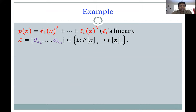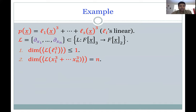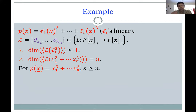Let's look at an example: sums of cubes of linear forms. The linear maps L are partial derivatives with respect to variables x1 to xn, mapping degree-3 polynomials to degree-2 polynomials. When applied to a cube of a linear form, the dimension is at most 1, since you just get the square of the linear form up to a constant. For the polynomial x1^3 + x2^3 + ... + xn^3, the partial derivative space has dimension n, since the derivatives x1^2, x2^2, ..., xn^2 are all linearly independent. So this polynomial requires at least n summands.